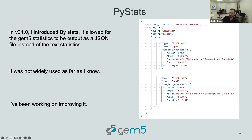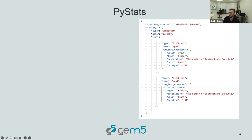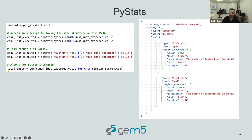It wasn't widely used as far as I know, but I have been working to improve it recently. This is what I went for with version 21.0 — it would just be a JSON file with a structure similar to your GEM5 sim object tree. You'd go from system down to CPU, the first CPU, you want the num instructions executed and you get its value. You also have other information there, like the description of the statistic, the unit, the data type, et cetera.